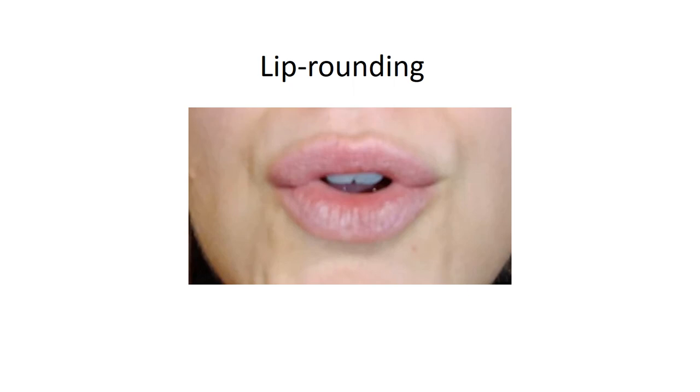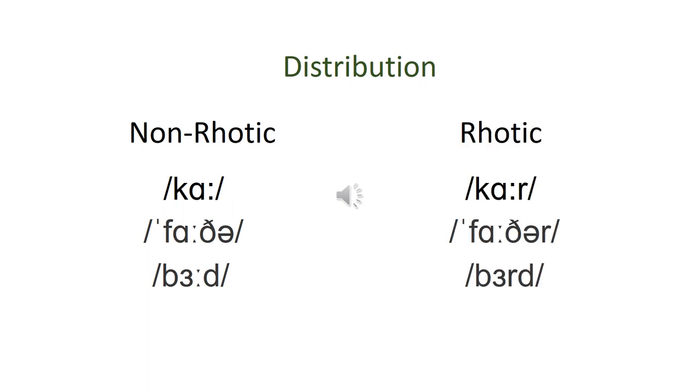In accents like the BBC accent, a non-rhotic accent, the R sound only occurs before vowels. This rule contrasts with rhotic accents, like most American, Scots, and West of England accents, where R is pronounced even in the final position or before a consonant.